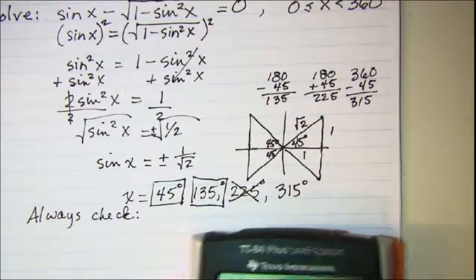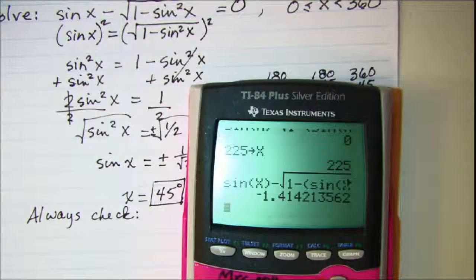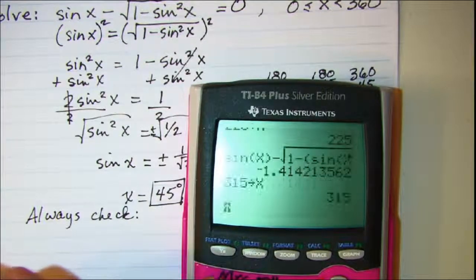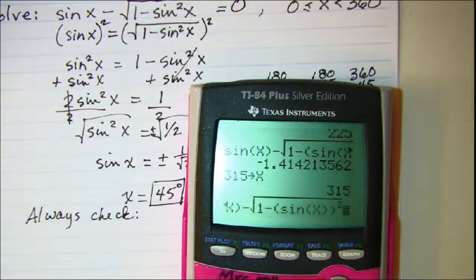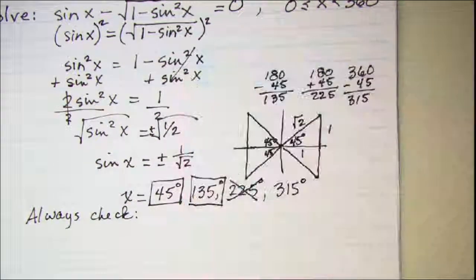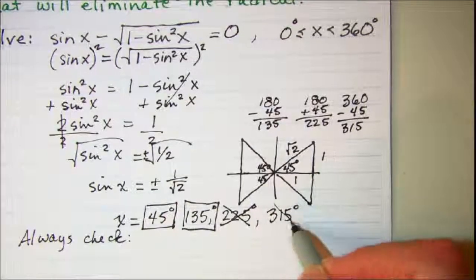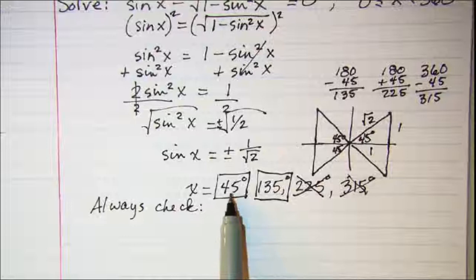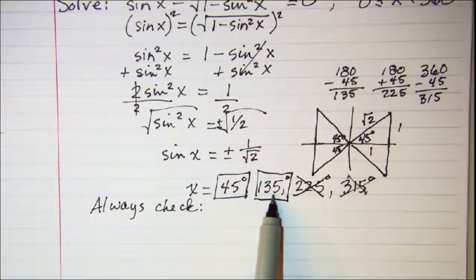And finally 315. That one also is not 0, so 315 does not work. My only solutions for this equation are 45 degrees and 135 degrees.